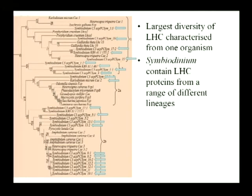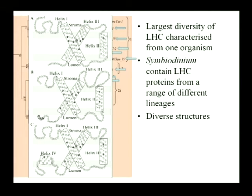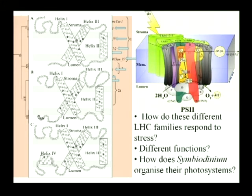If we take this further and look at the structure of these different proteins, we actually find very different structures in terms of how the proteins are organised in the membrane. We can see that some structures have extra transmembrane domains compared to others. Although these structural differences might not look very significant, they may mean we're getting very different functions in these LHCs — whether they're functioning differently in terms of how they're harvesting light or whether they're involved in photoprotection. This raises questions about how these different LHC groups respond to stress and how symbiodinium assembles light harvesting complexes with this huge diversity of proteins available.